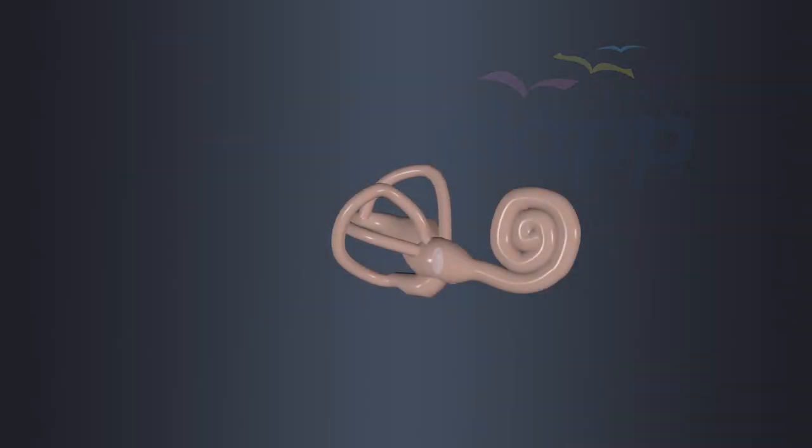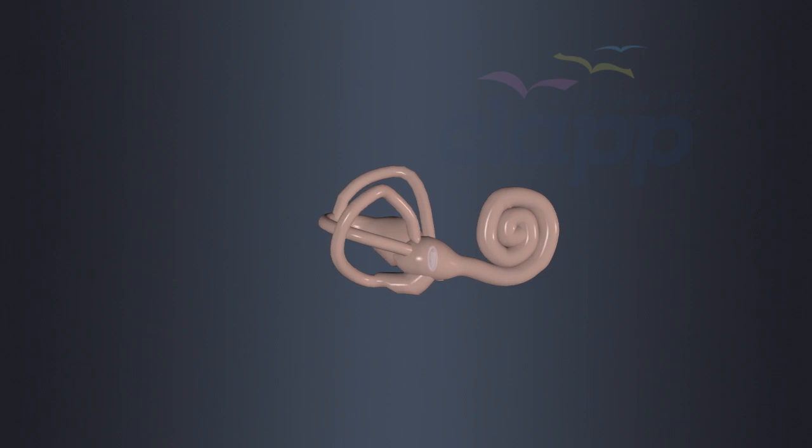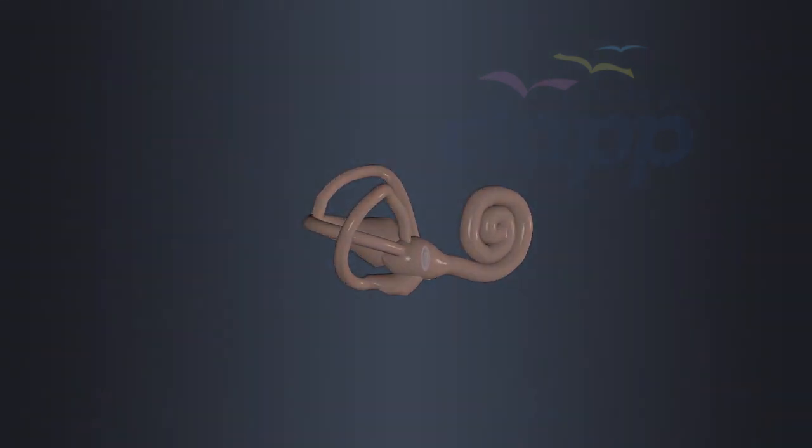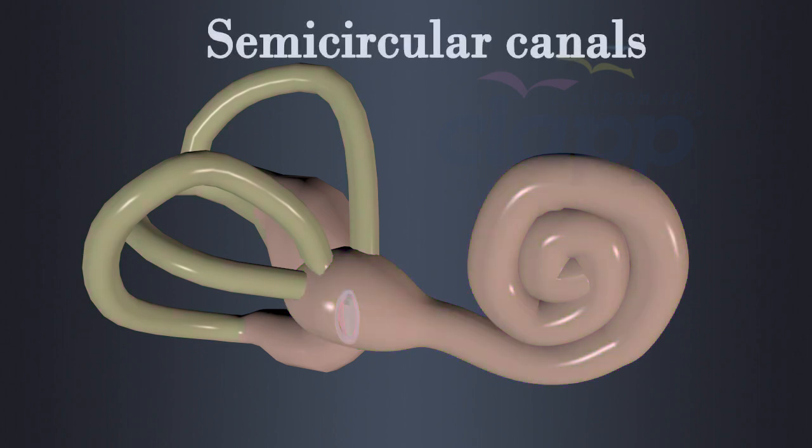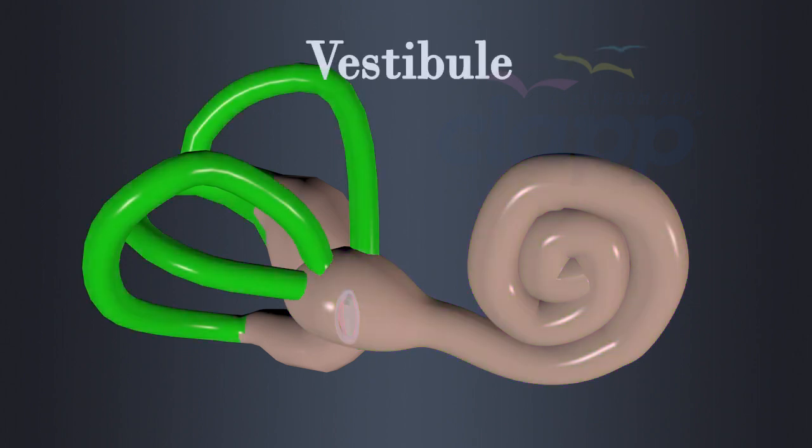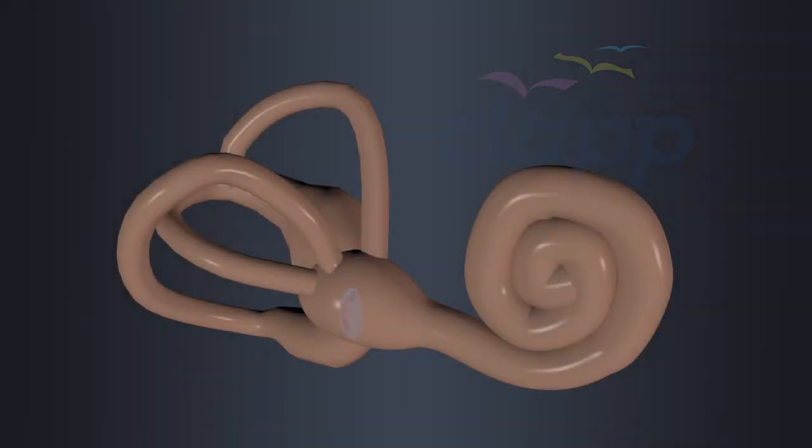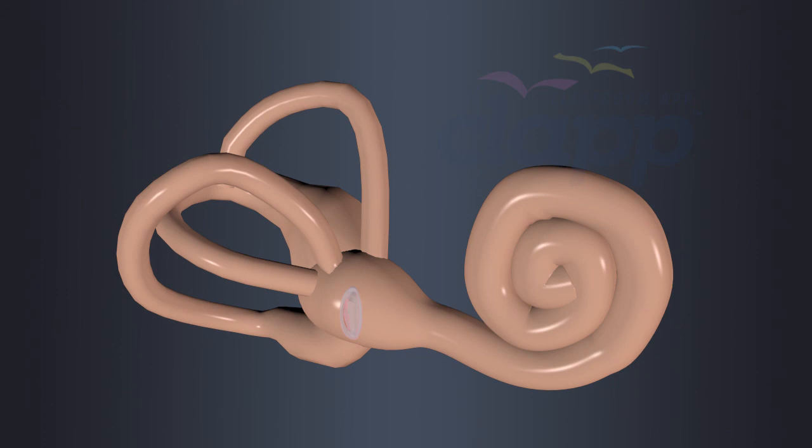The inner ear is a complex and delicate structure responsible for both hearing and body balance. Its main components are cochlea which is responsible for hearing, three semicircular canals and the vestibules which are responsible for maintaining body balance.